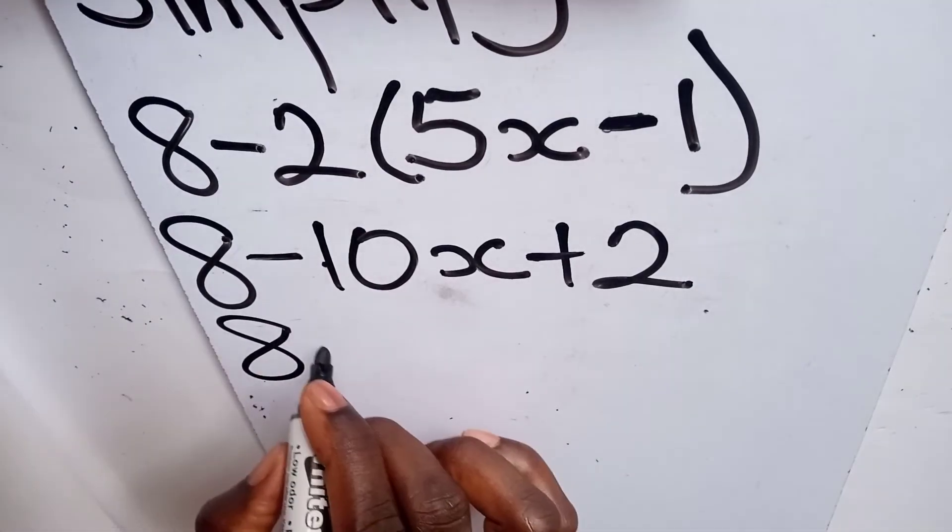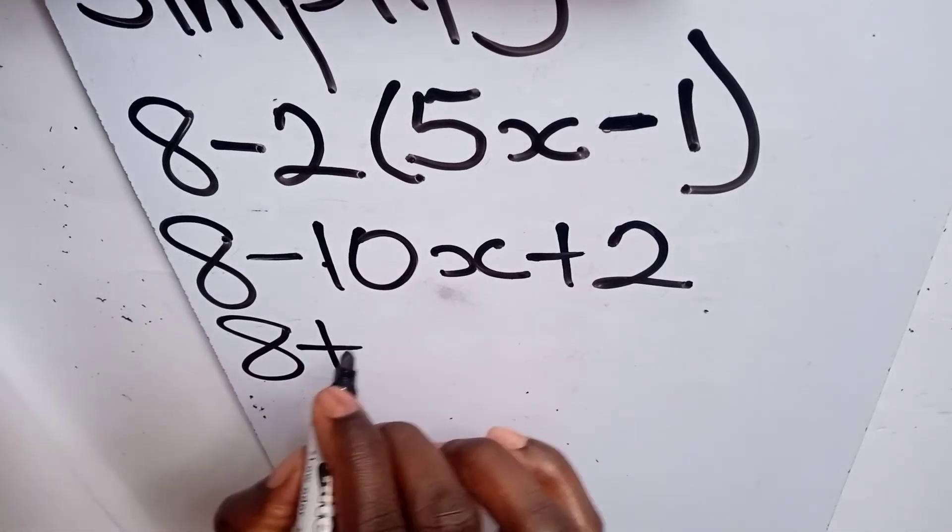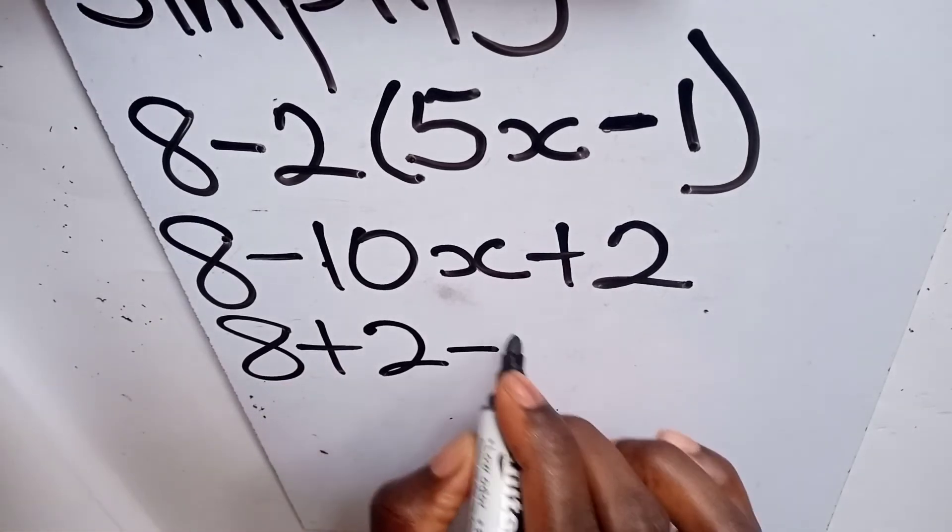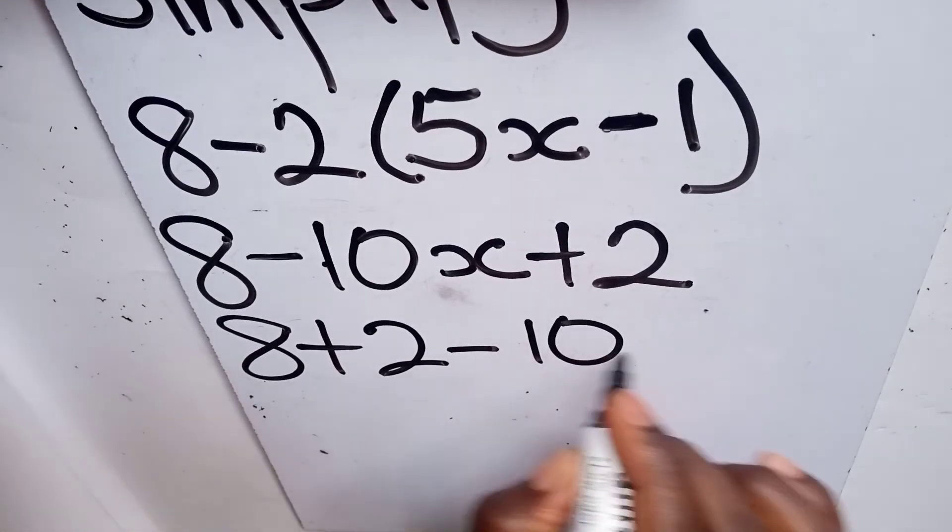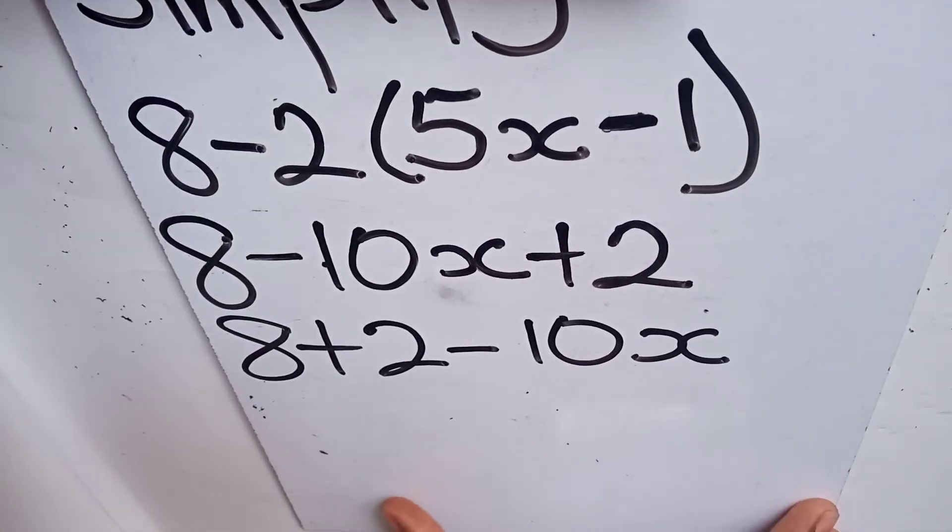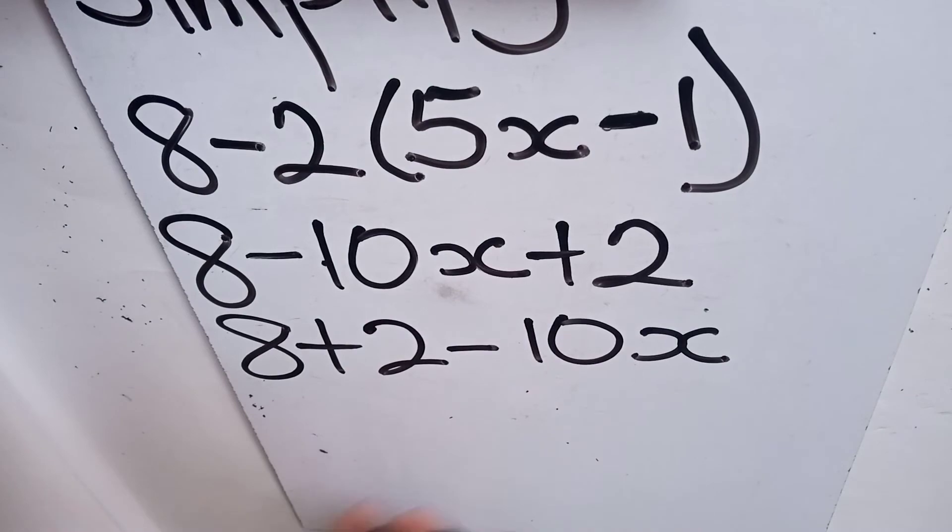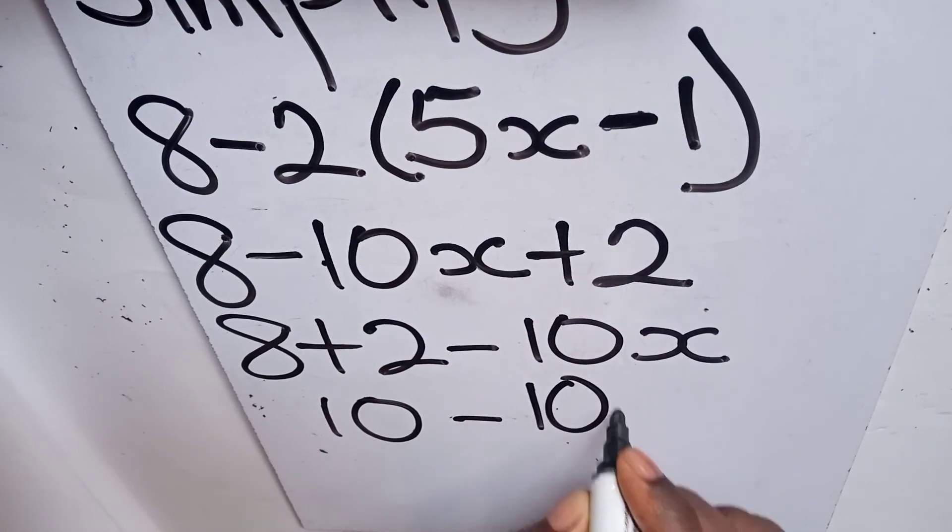We have 8 plus our 2, then we bring the negative 10x also here. Now we can add them. So 8 plus 2 gives us 10 then minus 10x.